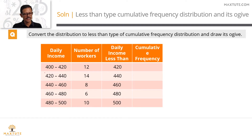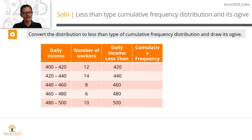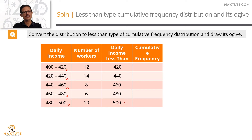This is the data given to us — five different income class intervals and the number of workers in each. To draw a less-than type cumulative frequency, we pick the upper end of each class interval and write: daily income less than 420, less than 440, less than 460, less than 480, less than 500.